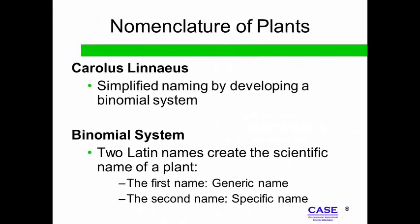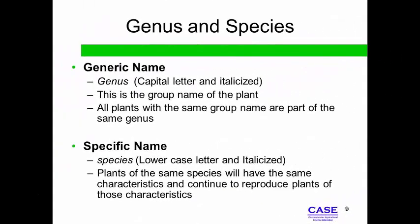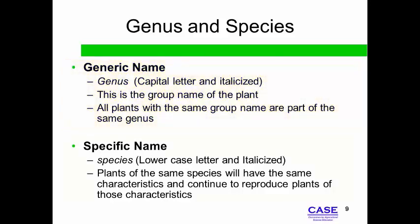The Swedish botanist Carolus Linnaeus developed the system where all plants were assigned a specific name based upon a two-name system called a binomial system. This system has been in place for over 200 years. The binomial system uses a generic and species name for the plant. Plants of the same genus have characteristics that are similar to each other, and plants of the same species will reproduce plants of the same characteristics when bred.